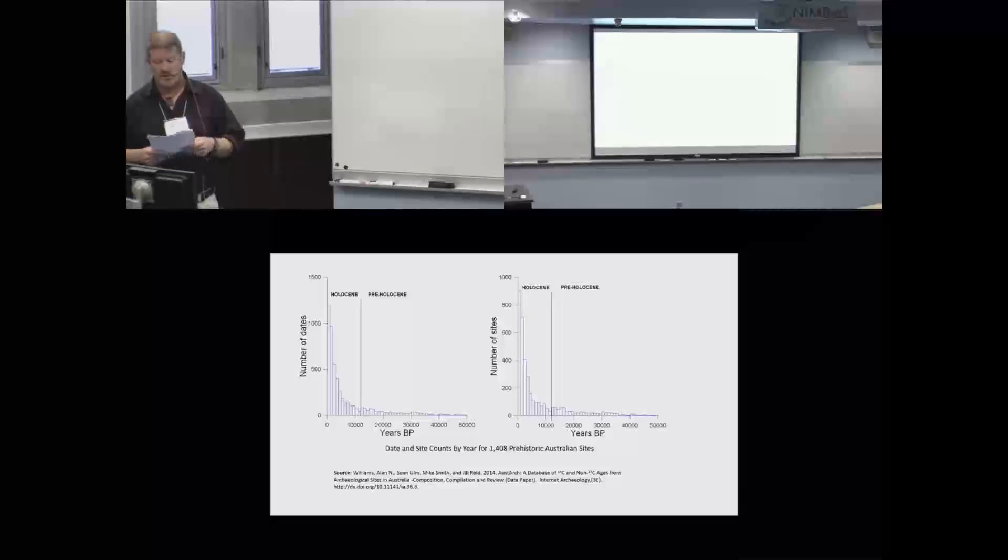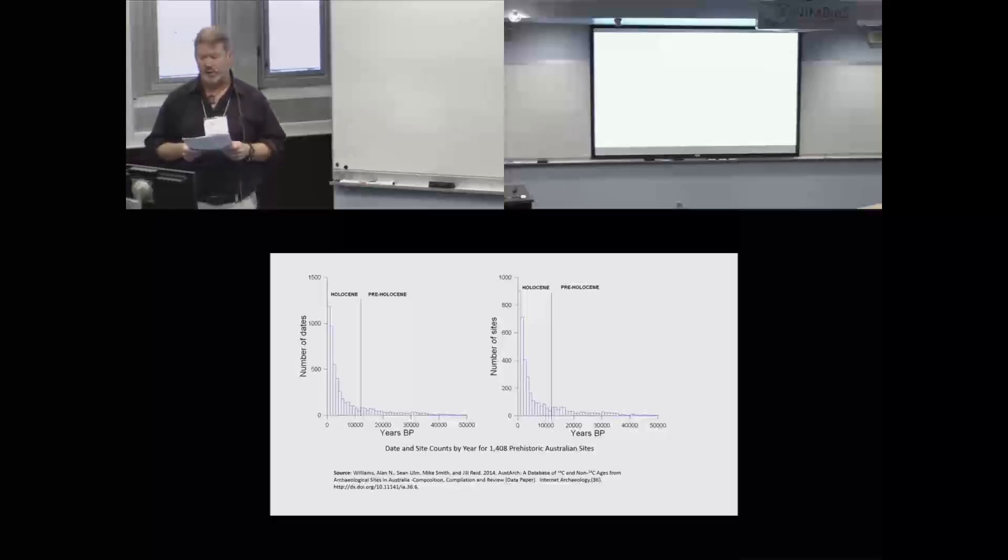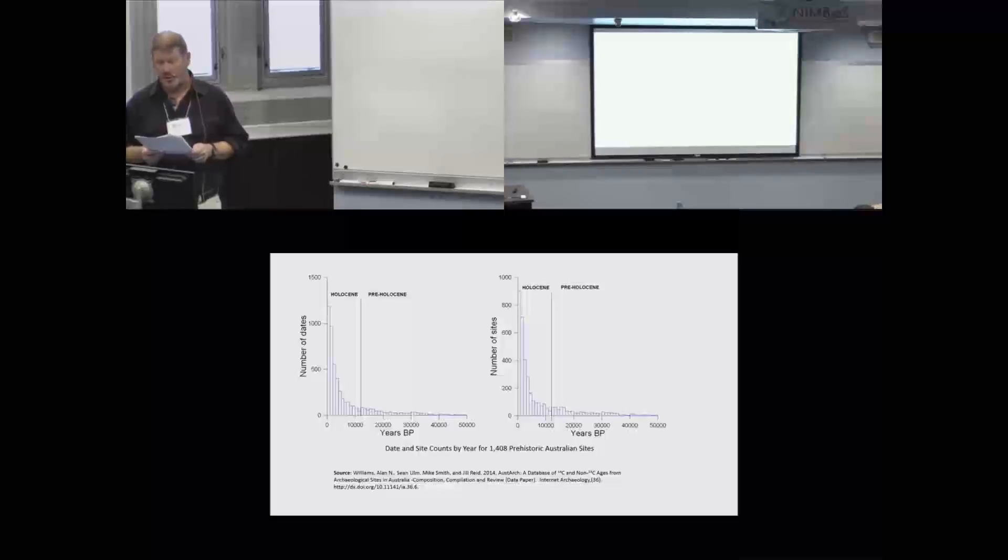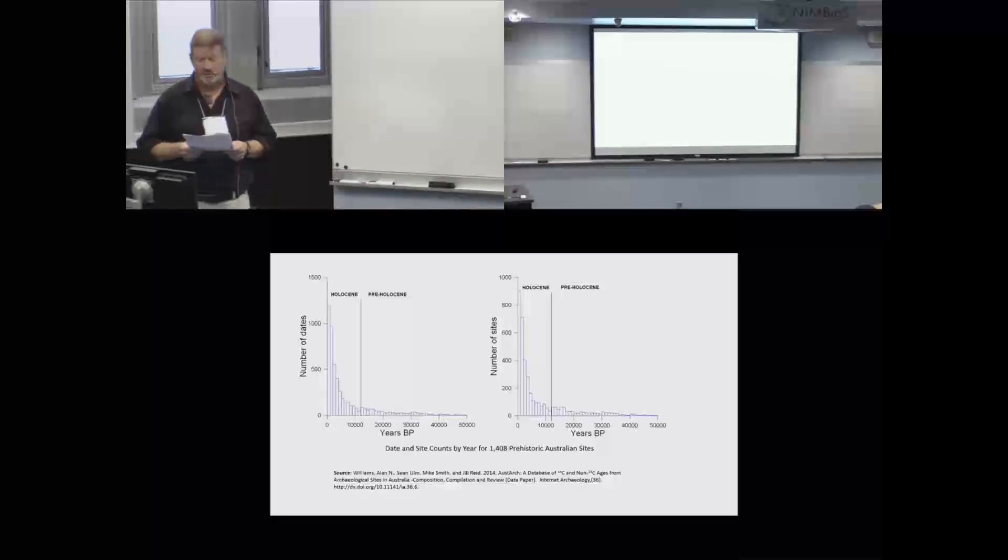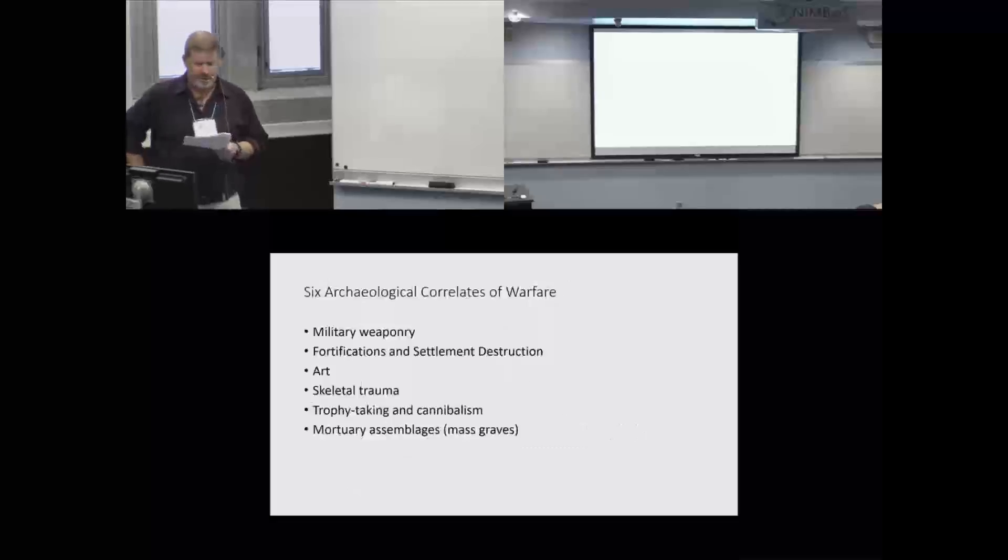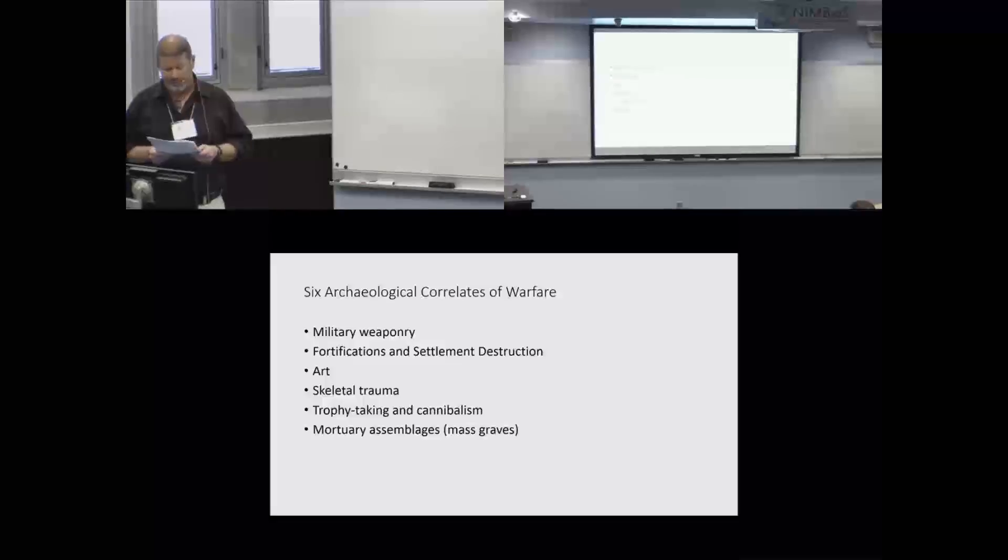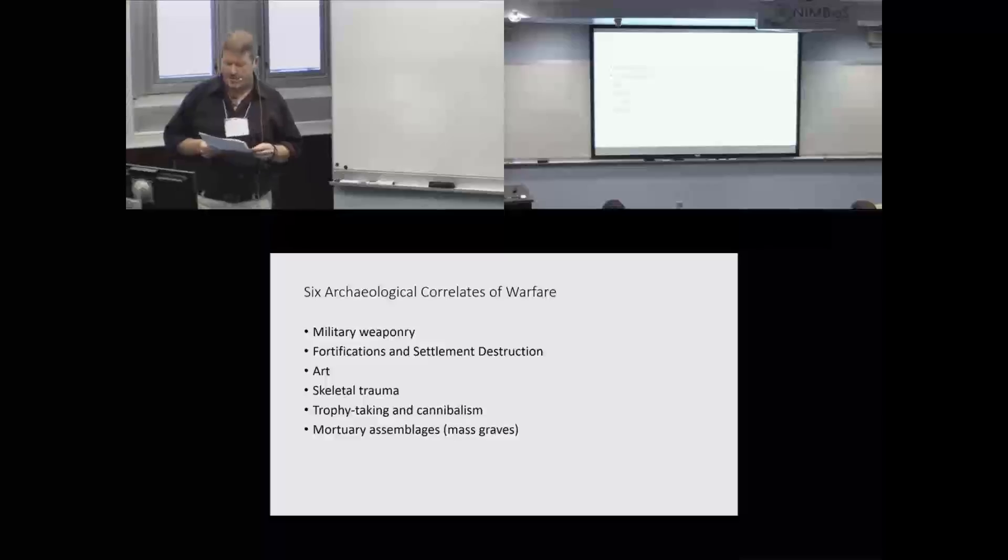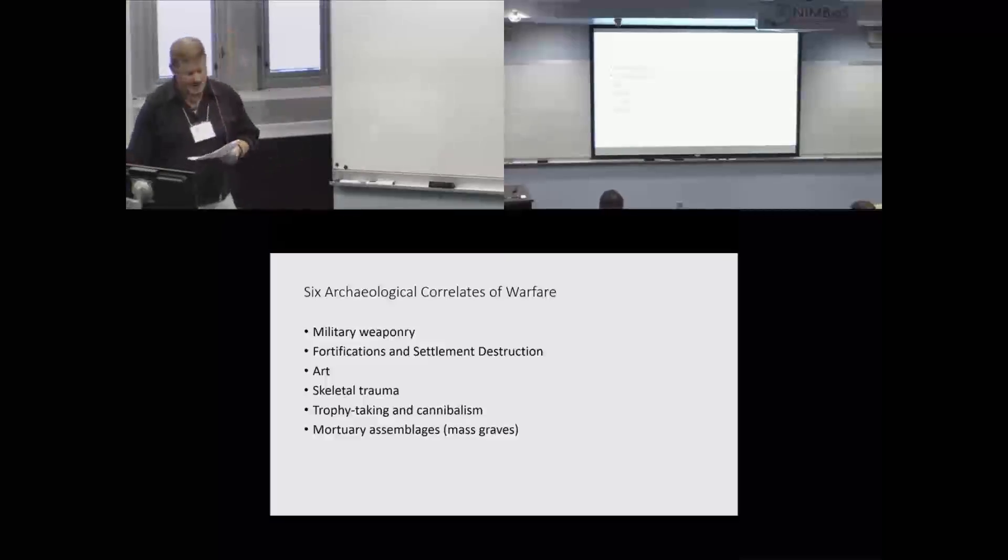Nevertheless, site inventories from regions with records that extend into the pre-Holocene era indicate that the former is markedly impoverished relative to the latter. A good example of this is Williams et al.'s chronological database for prehistoric Australia, which contains nearly four Holocene dates for every pre-Holocene date or a ratio of 5 to 1 for sites. If the comparative poverty of the archaeological record presents a challenge to detecting pre-Holocene war, ambiguities in interpreting that record are an even greater impediment. Archaeologists have at their disposal six categories or correlates of evidence of war. The difficulty is that none of these unambiguously signals the presence of war, particularly for the pre-Holocene.